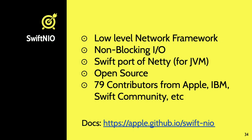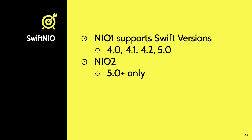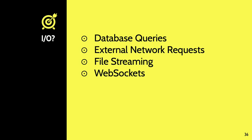Swift NIO is a low-level networking framework with non-blocking IO. It's actually a Swift port of Netty, which is basically Swift NIO but for the JVM — used in a lot of places for real-time stuff with Java backends. Swift NIO is open source, currently with 79 contributors from Apple, IBM, and the Swift community. Swift NIO 1 supports Swift versions 4 through 5; for Swift 5.1 and above you'll use Swift NIO 2, which came out this year.